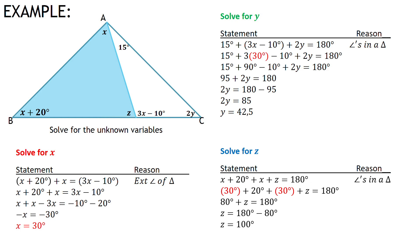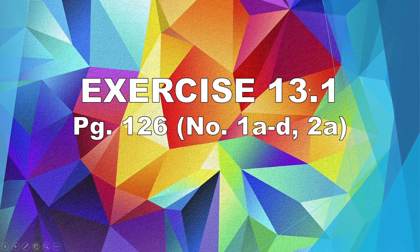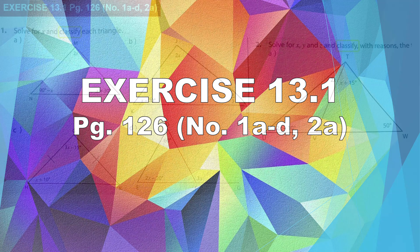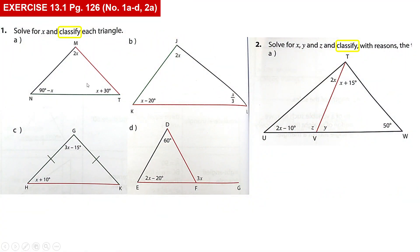I know I went through that a little bit quickly — I don't want to make the video too long because of everyone's data. So just pause the video and take this down. For homework, please do exercise 13.1 on page 126. You need to solve for x and then classify the triangle. For example, if all angles equal 60, it's equilateral. If only two angles are equal, it's isosceles. Solve for all the unknowns — if there's an x, y, z, solve for all variables.